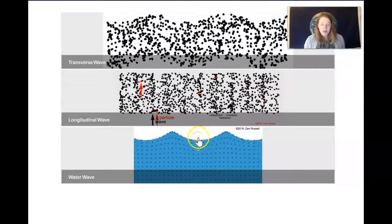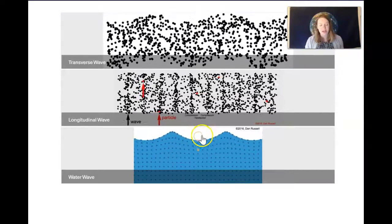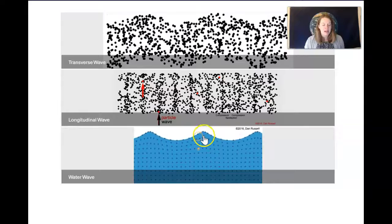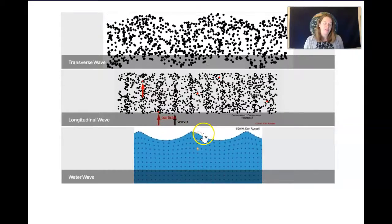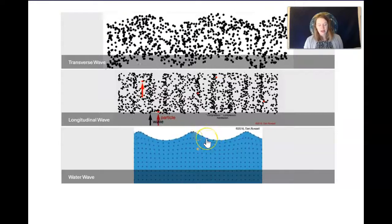Water waves are a little different. And I bet when you answer the question, like what is a wave, you probably mentioned something about water waves. And they have kind of a combination of transverse and longitudinal and the particles in a water wave move kind of in little circles here.